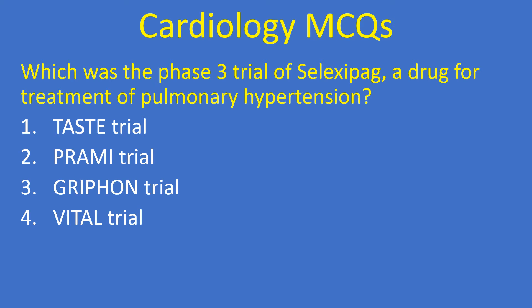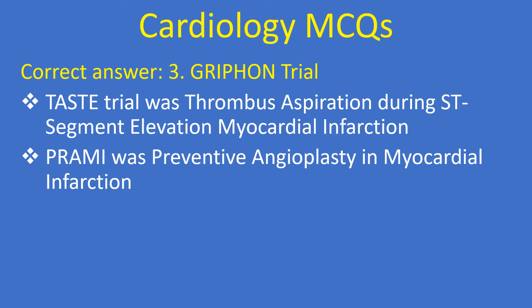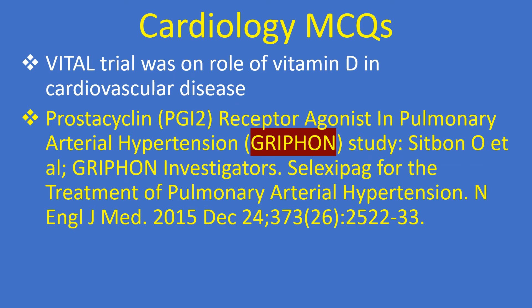Question: Which was the phase 3 trial of Selexipag, a drug for treatment of pulmonary hypertension? Option 1: TASTE trial. Option 2: PRAMI trial. Option 3: GRIPHON trial. Option 4: VITAL trial. Correct answer: 3, GRIPHON trial. The TASTE trial was thrombus aspiration during ST-elevation myocardial infarction. PRAMI was preventive angioplasty in myocardial infarction. The VITAL trial was on the role of vitamin D in cardiovascular disease.